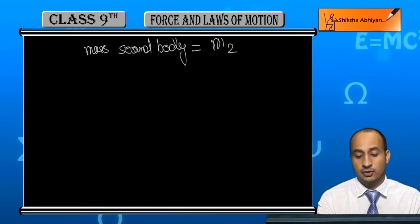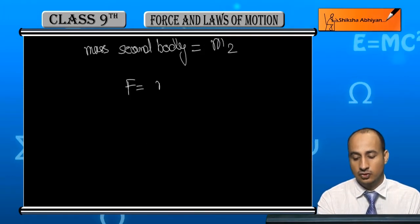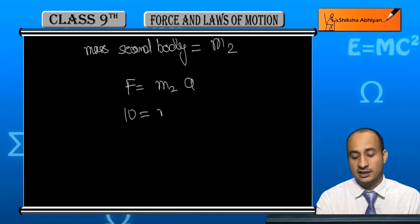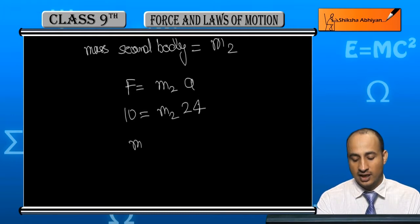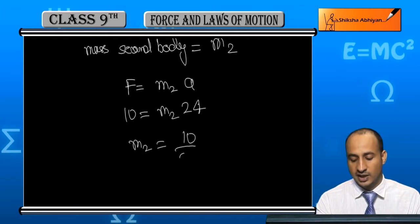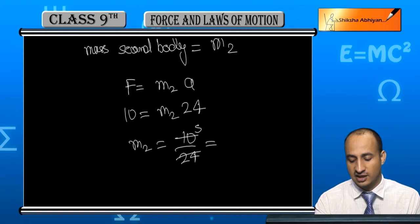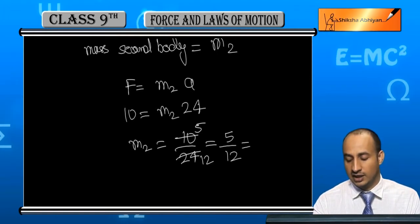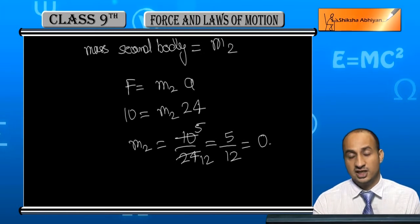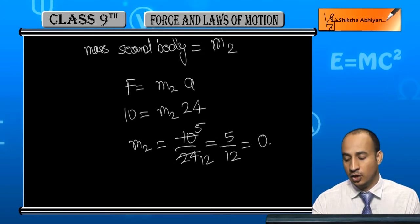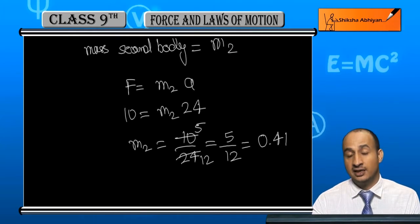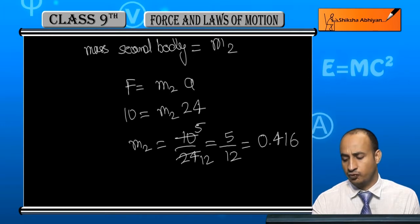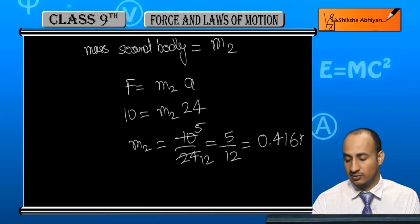So acceleration here is 24, force is 10 newton, and we need to find m2. m2 is equal to 10 divided by 24, which simplifies to 5 by 12. Calculating 5/12 gives approximately 0.416 kilogram.